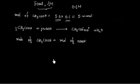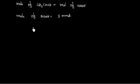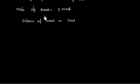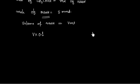Moles of acetic acid is 5 millimole, so moles of NaOH is also 5 millimole. Moles can be calculated as molarity times volume. Molarity of NaOH is 0.1 M, and let volume of NaOH required be V mL. So V × 0.1 = 5, giving V = 50 mL.